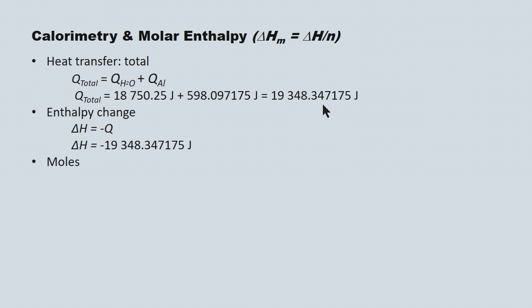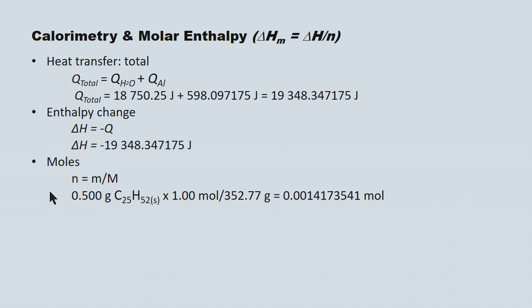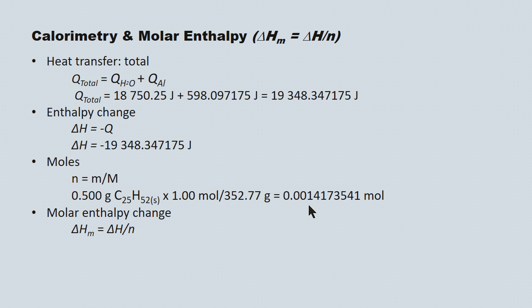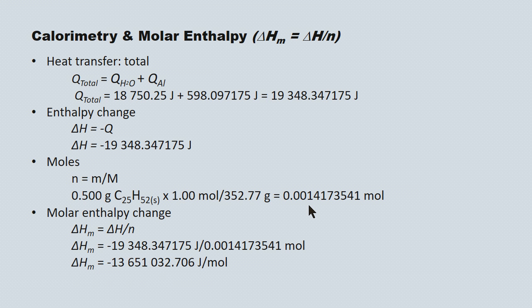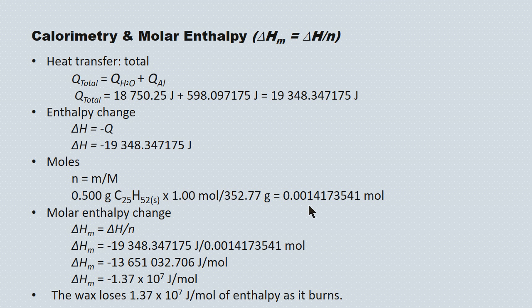We determine moles of candle wax consumed using n equals m over M. We burned 0.500 grams of candle wax, and multiplying by 1 mole over the molar mass gives 0.00141 moles of candle wax consumed in the combustion. Applying the molar enthalpy formula — delta HM equals delta H over N — and plugging in our values, we get a molar enthalpy change of negative 1.37 times 10 to the 7 joules per mole. The wax loses 1.37 times 10 to the 7 joules per mole of enthalpy as it burns.